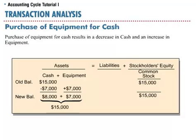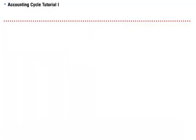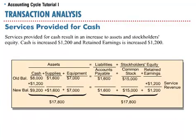SoftBite purchases computer equipment for $7,000 cash. This results in a decrease to cash of $7,000 and an increase to equipment of $7,000. SoftBite then receives $1,200 for services provided, resulting in an increase to cash of $1,200 and an increase to retained earnings of $1,200. The increase to retained earnings is the result of service revenue.